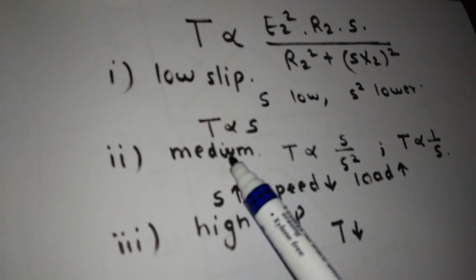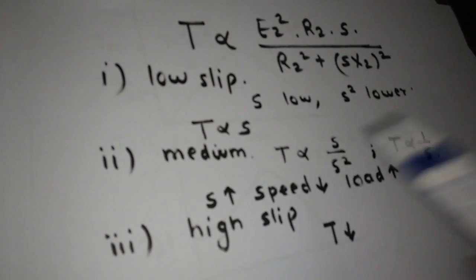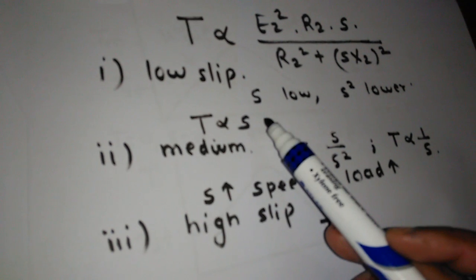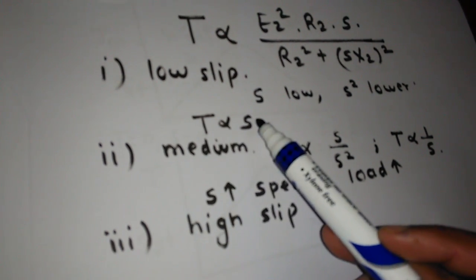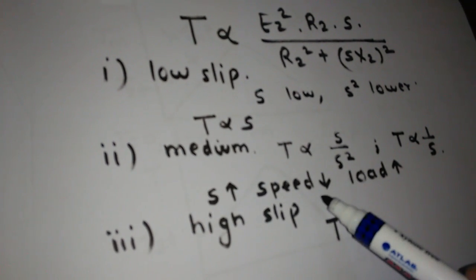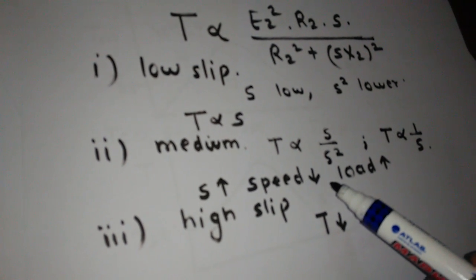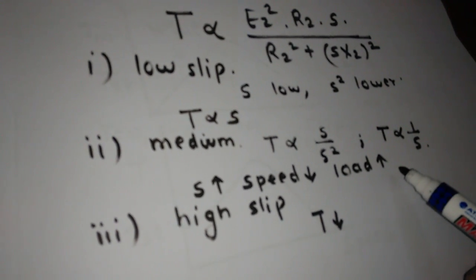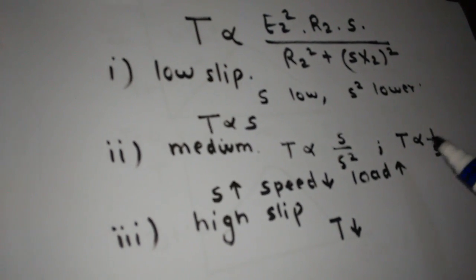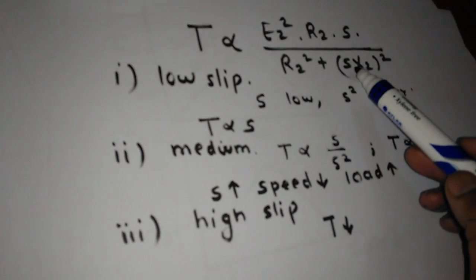Next region is a medium region where the slip increases. As the slip increases we know that speed will be decreased, and as speed decreases the load increases. So the slip value will be more here.